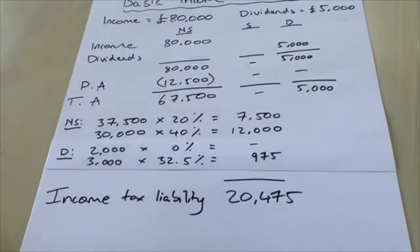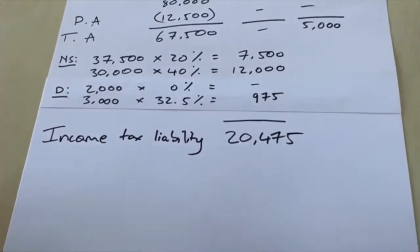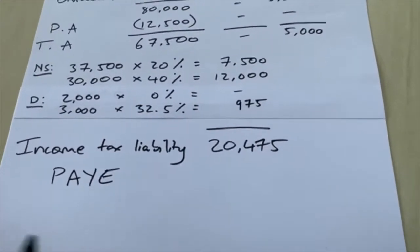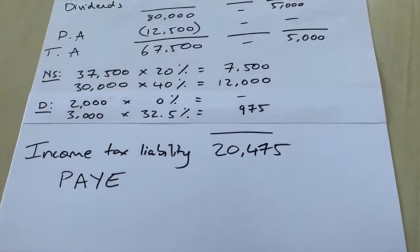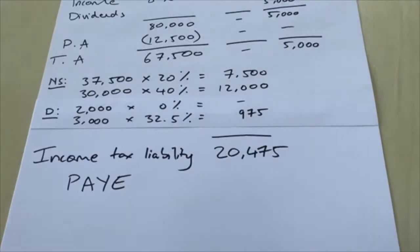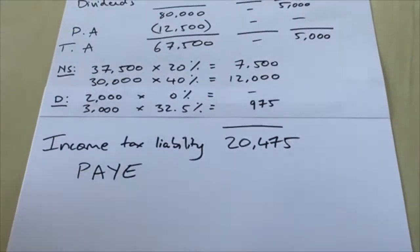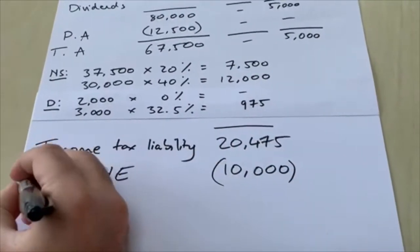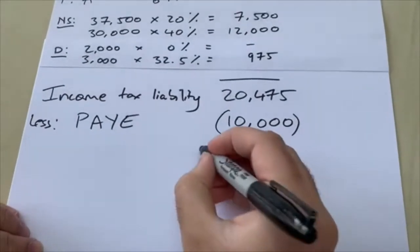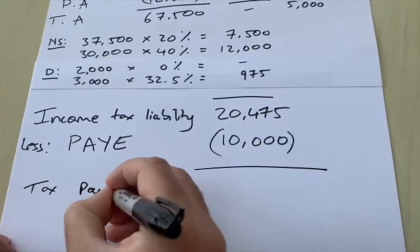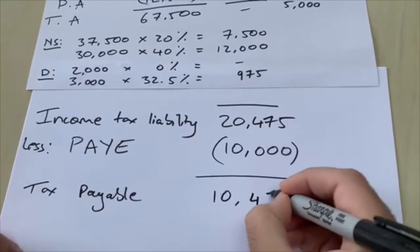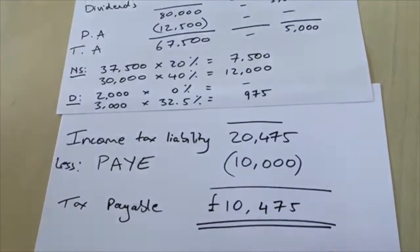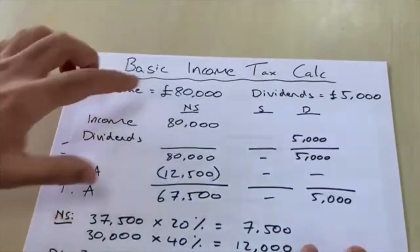Your employer will have paid you £80,000 and during the year you'll see a PAYE (Pay As You Earn) deduction on your payslip — you're taxed on this monthly. Let's say the total year-to-date PAYE already paid is £10,000. Deducting that from our total income tax liability of £20,475, your remaining tax payable is £10,475.